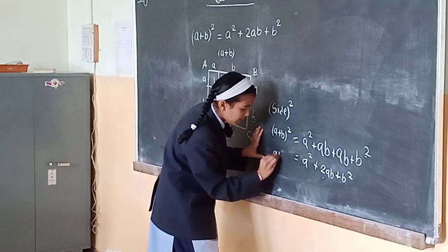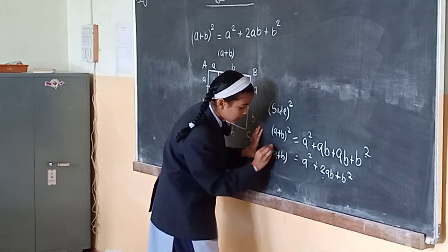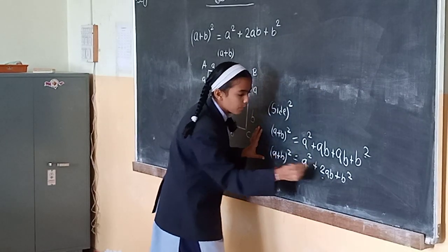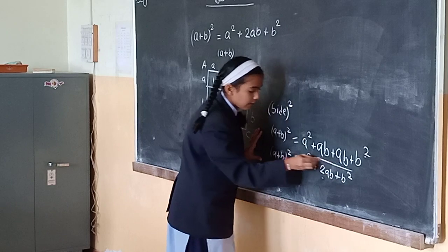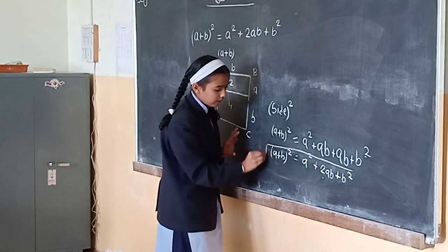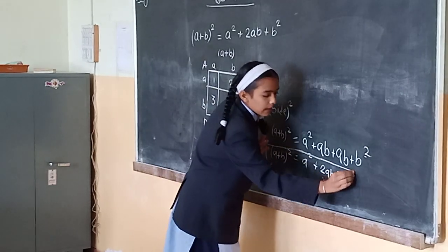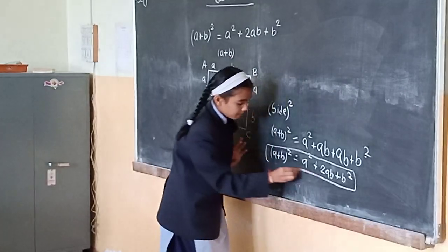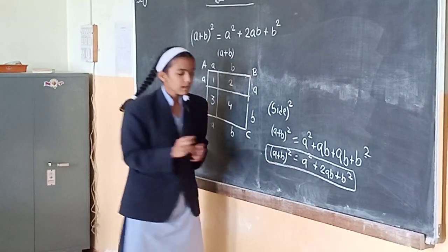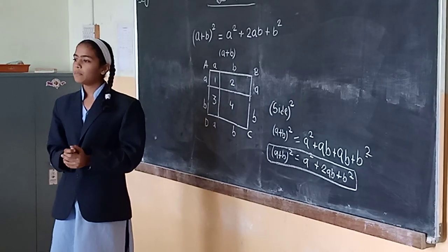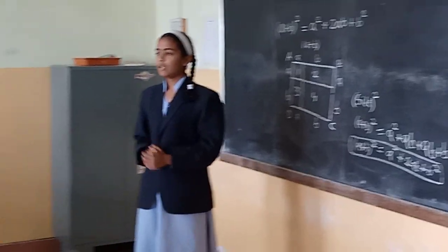Hence I have proved the given identity, that is (a + b)² is equal to a² + 2ab + b². Thank you.